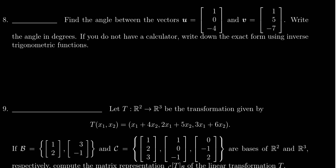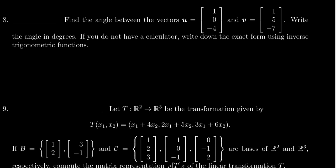In this video, we will present the solution to question number 8 from practice exam number 3 for Math 2270, in which case we are asked to find the angle between the vectors u, given as 1, 0, negative 4, and v, given as 1, 5, and negative 7.